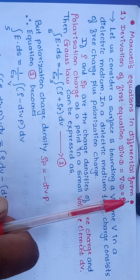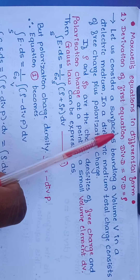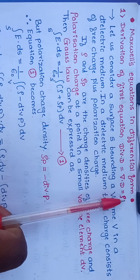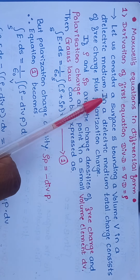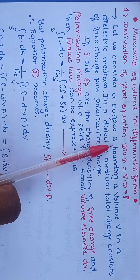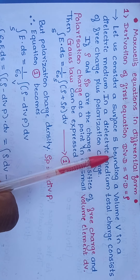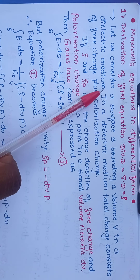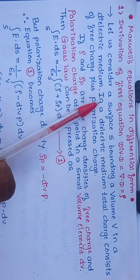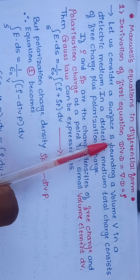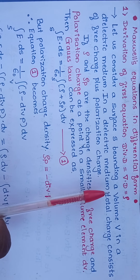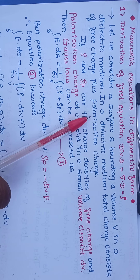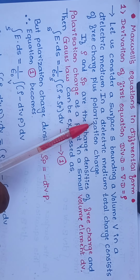Now we have to derive the first Maxwell's equation in differential form, that is divergence of D equal to rho. Let us consider one surface S that is bounded by a volume V in a dielectric medium. The dielectric medium consists of charges — the total charge consists of free charges and polarization charges.